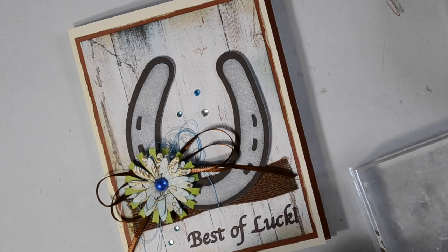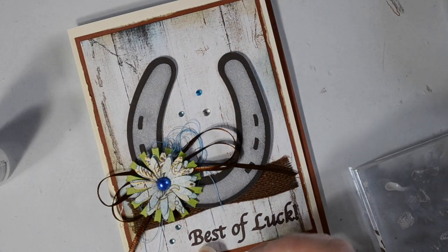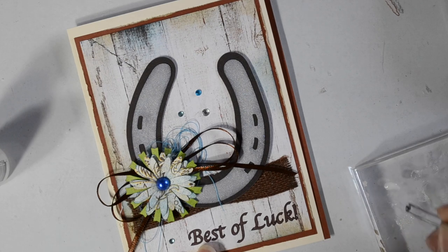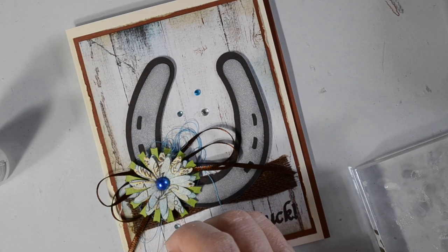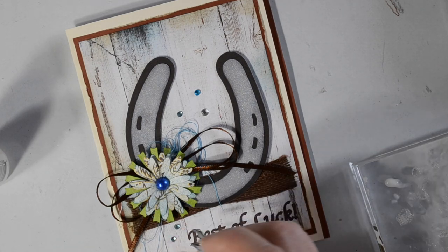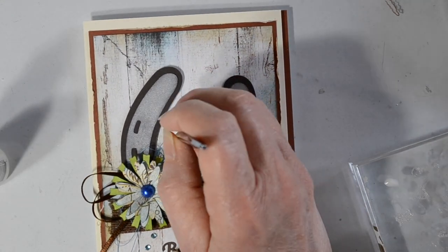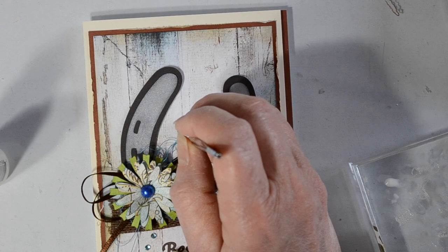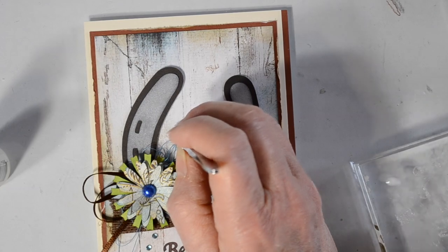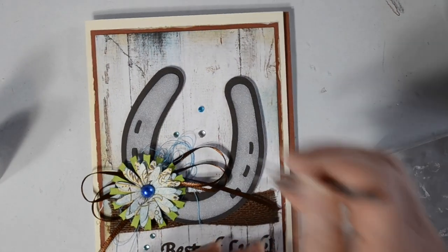Time to adhere some gems because the theme over at Cut It Up's challenge is embellish it or embellishments. So I wanted to use quite a few. I used the fiber strip and the gem and the little rhinestone gems and the flower and the thread and the bow. So I have quite a few little embellishments on here. And you know if you watch my videos that when the embellishments, the little gems come out, we are at the end.